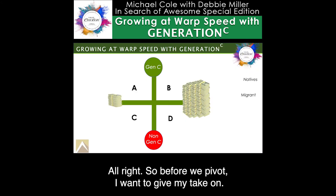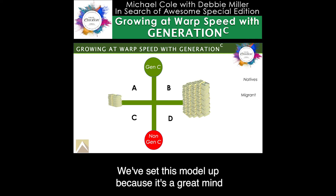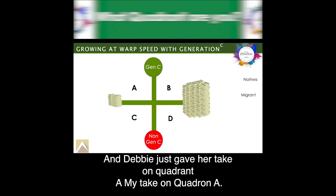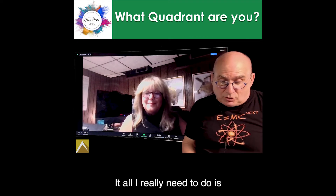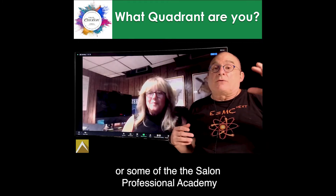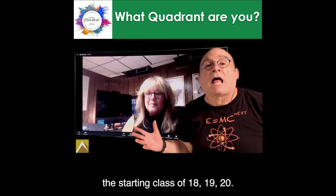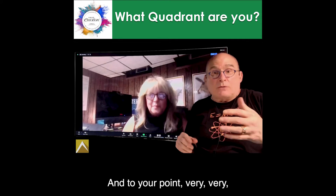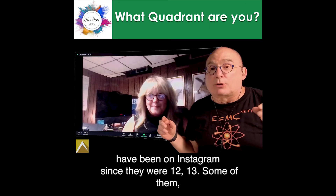Before we pivot, I want to give my take. We've set this model up because it's a great mind map that shows us where you currently are. My take on Quadrant A is that I just need to go into the Summit Salon Academy schools or some of the Salon Professional Academy schools and look at the starting class — 12, 18, 19, 20-year-olds — and to your point, very, very mobile, have been on Instagram since they were 12 or 13.